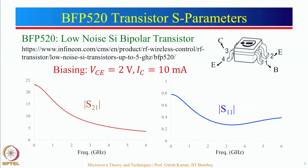Let us go to the next part: how to design a microwave amplifier using transistors. Here we have taken an example of a BFP520 transistor, which is known as a low-noise silicon bipolar transistor. It is available from Infineon, and you can click on the link to see the data sheet of this particular transistor. This transistor is to be biased for V_CE equal to 2 V and I_C equal to 10 mA.